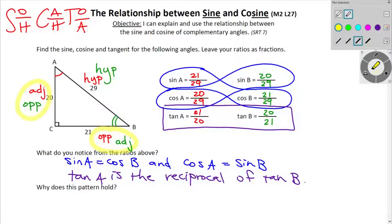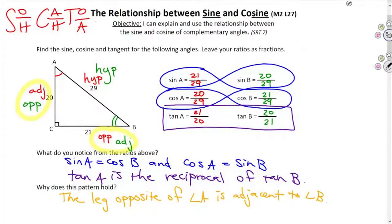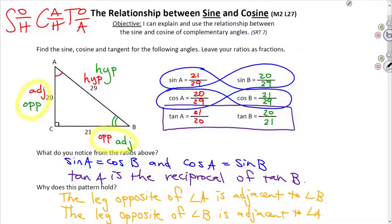Because the side opposite of A is the adjacent to B, and similarly, the leg opposite of angle B is adjacent to angle A. So because we switch the legs as we switch the angles, the sine of A is the same as the cosine of B, and the cosine of A is the sine of B. That's also why the tangent is the reciprocal — because of that switching that happens.